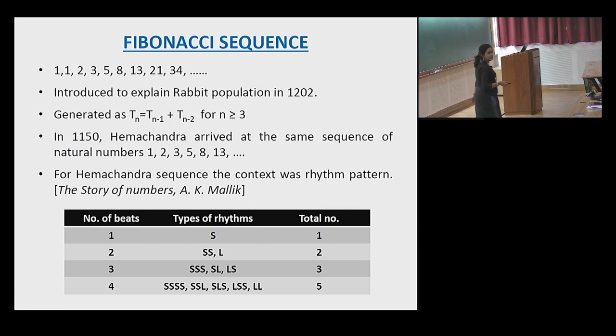This is a typical Fibonacci sequence. It was introduced by Fibonacci, but before that, in India, Hemachandra arrived at the same sequence in a different context, which is in the context of rhythm in Sanskrit poems.